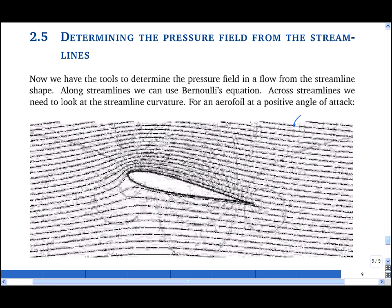This is a diagram of the streamlines and pressure contours around an airfoil at positive angle of attack. At the front there is a region of high pressure, over the top of the wing there is an area of low pressure, and underneath the wing there is an area of slightly low pressure.